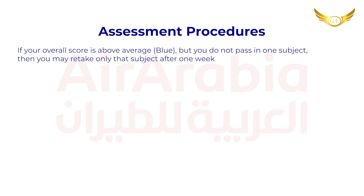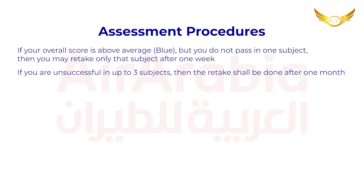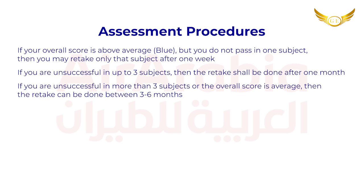If your overall score is above average — it is called blue — but you do not pass in one subject, then you may retake only that subject after one week. If you're unsuccessful in up to three subjects, the retake shall be done after one month. If you are unsuccessful in more than three subjects, or the overall score is average, then the retake can be done between three to six months.